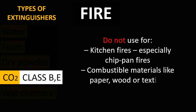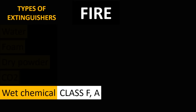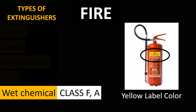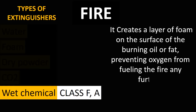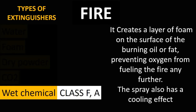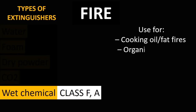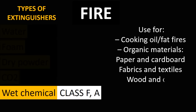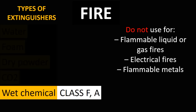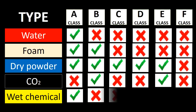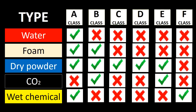The last type of fire extinguisher is wet chemical. Wet chemical type fire extinguishers are used for Class F and Class A fires and they have a yellow label color. Wet chemicals create a layer of foam on the surface of the burning oil or fat, preventing oxygen from fueling the fire further; the spray also has a cooling effect. These are used for cooking oil or fat fires, and on organic materials such as paper, cardboard, fabrics, textiles, wood, and coal. Do not use wet chemical fire extinguishers for flammable liquid or gas fires, electrical fires, or flammable metals. So before you fight the fire, make sure you are using the right type of fire extinguisher for the right class of fire.